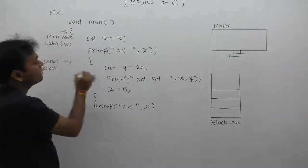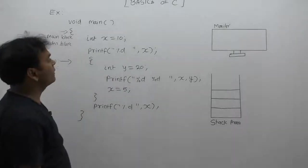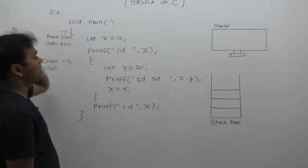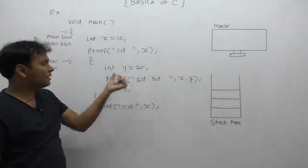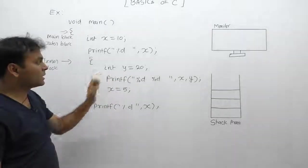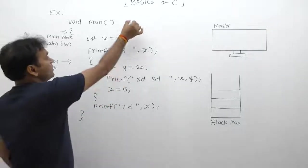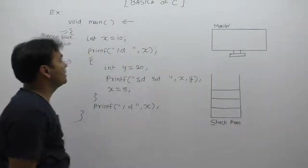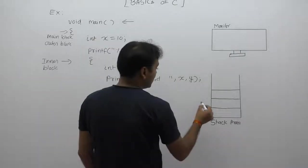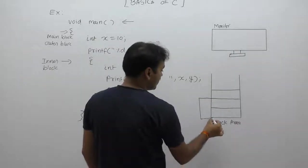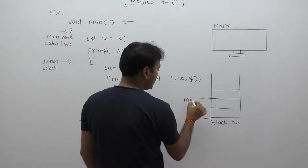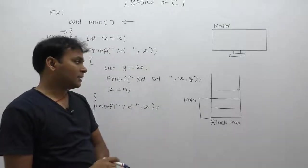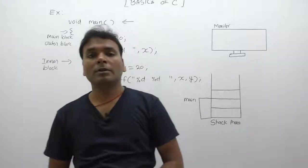Variable x is created inside the outer block and y is created inside the inner block. Memory allocation for x is performed whenever execution control enters the outer block. Similarly, memory allocation for variable y is performed whenever execution control enters the inner block. Initially, control is placed at the beginning of main, and main function execution is performed inside stack memory, because whenever any function is called, it is stored inside the stack area.